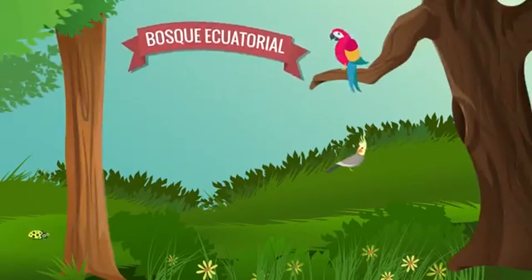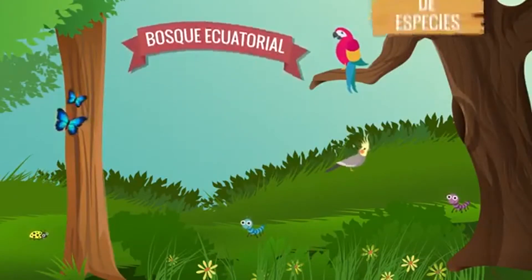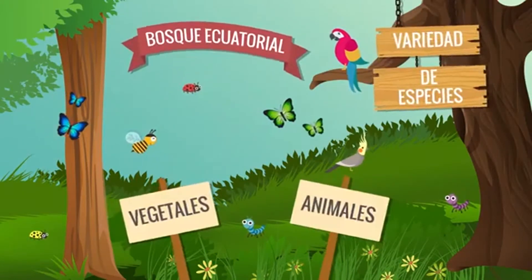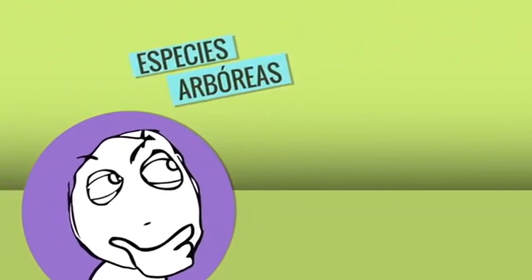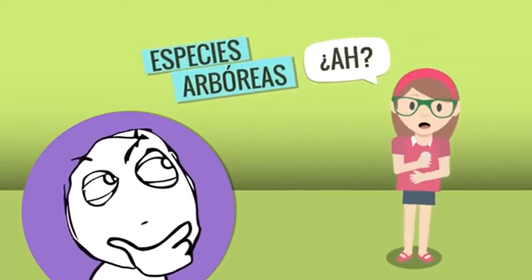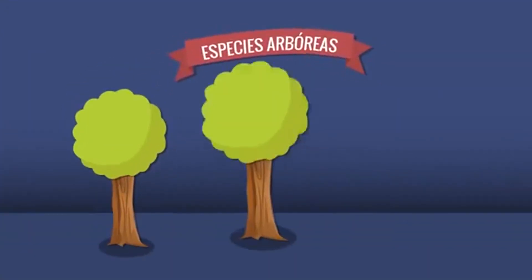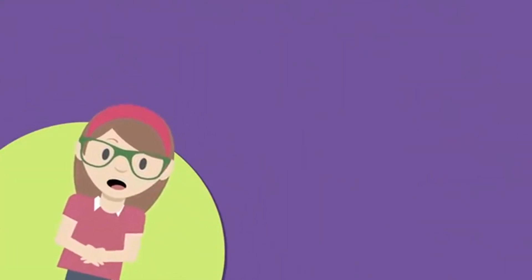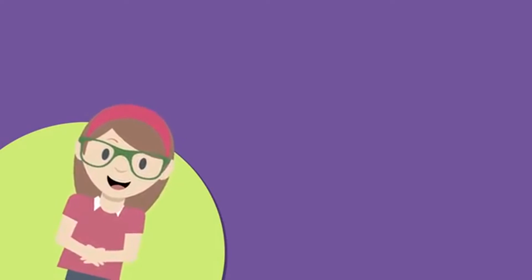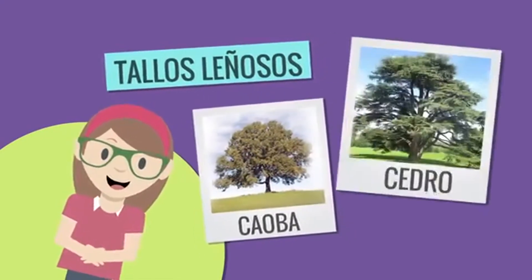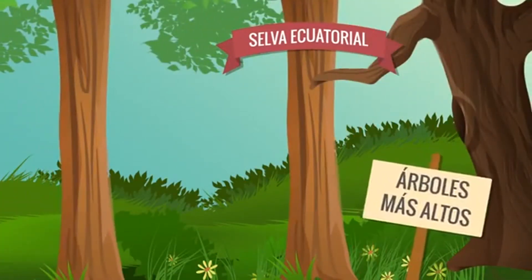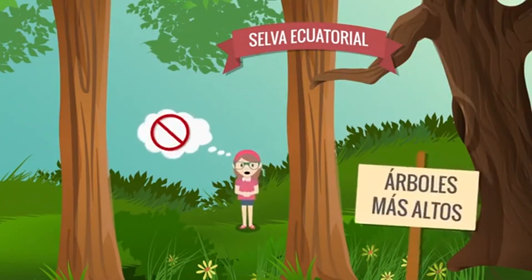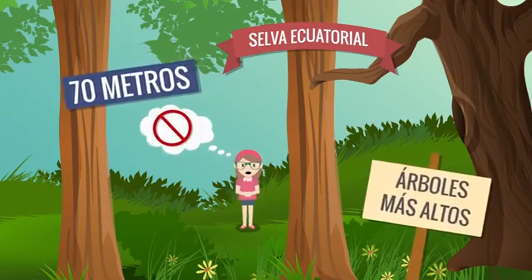El bosque ecuatorial o la selva se caracteriza por la infinidad de variedad de especies. Estas pueden ser vegetales o animales, sobre todo de aves e insectos. Predominan también las especies arbóreas, que son un conjunto de plantas con tallo leñoso. Por ejemplo, están los tallos leñosos como la caoba o el cedro. En la selva ecuatorial se encuentran los árboles más altos, que alcanzan a veces los 70 metros de altura.